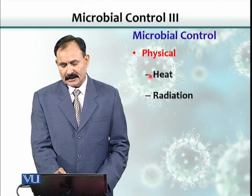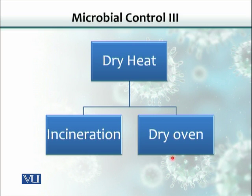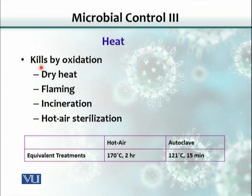Physical methods include heat and radiation. Heat has two forms: dry heat and moist heat. Dry heat is further classified into incineration and dry oven. In incineration, we basically burn the object or the organism. In a dry oven, we provide heated air — without burning directly, we kill the organism by heat.